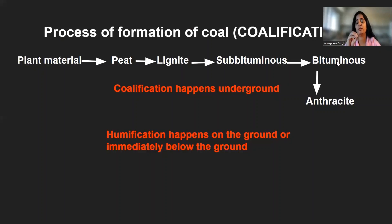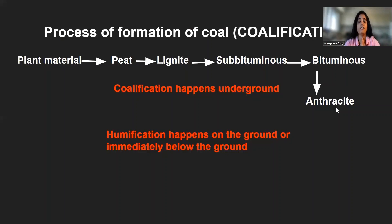Then comes bituminous coal. At this stage the coal becomes even harder, the carbon content increases, and moisture content lowers further. Finally is anthracite — at this stage coal is in its best form: its hardest, its shiniest, with the highest carbon content, the lowest moisture content, and the lowest volatile matter content.